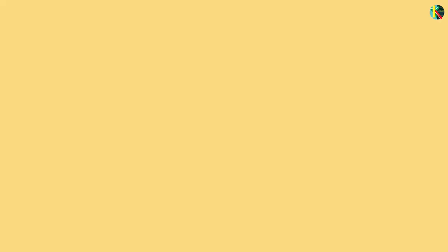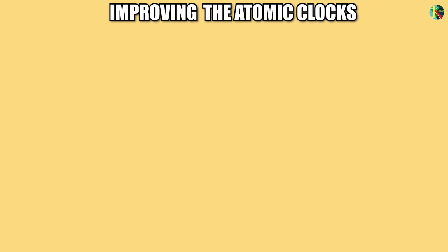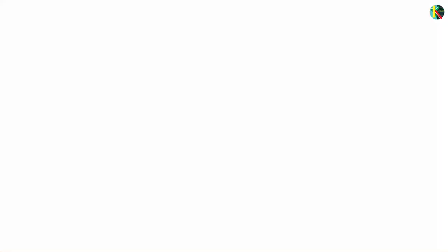There are a couple of ways to implement this idea, for example single ion in an ion trap, neutral atoms in an optical lattice or atoms packed in a 3D quantum gas optical lattice. Atoms with much higher transition frequency than cesium are being used in such clocks like calcium with 456 trillion cycles per second or ytterbium with 518 trillion cycles per second.